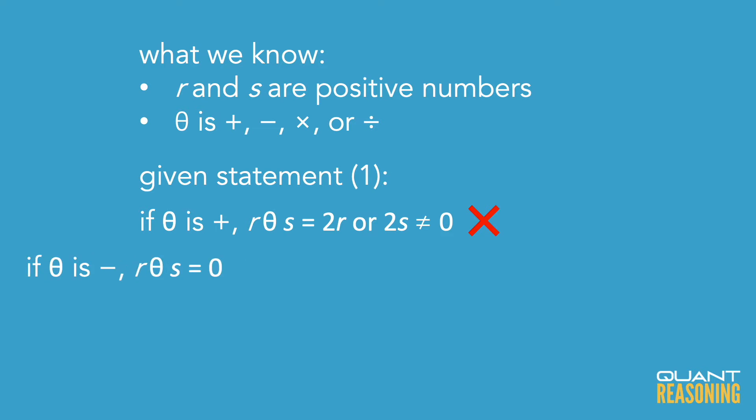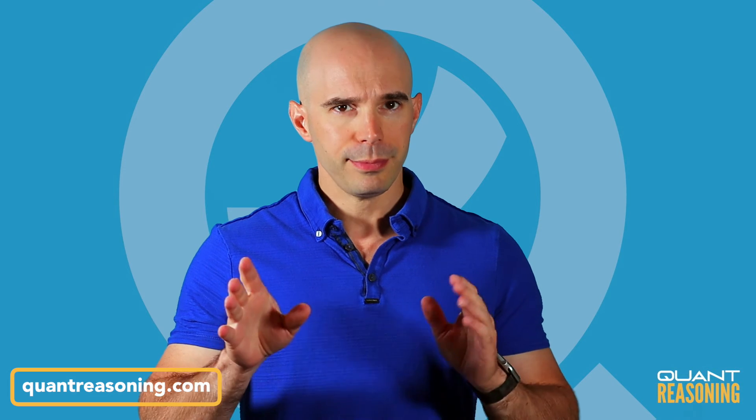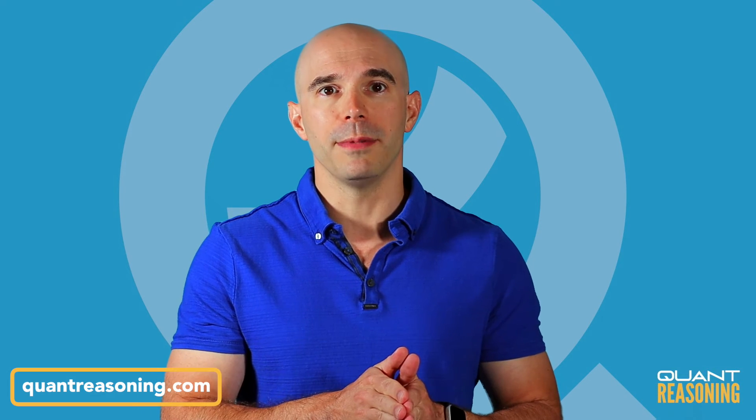How about subtraction? If r equals s, r minus s — yes, that would be zero. So it could be subtraction. But I'm not done yet because there are two more operations: multiplication and division. I need to make sure that those are not possible given statement one, and then I can say statement one is sufficient on its own.